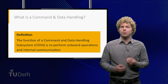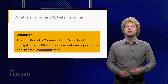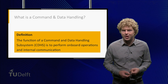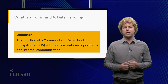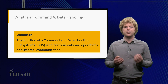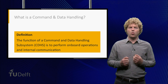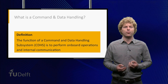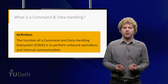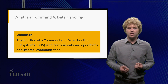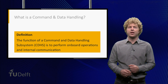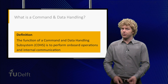The function of a command and data handling subsystem is to perform onboard operations and internal communication. This internal communication is used for commands and data between spacecraft subsystems. Onboard operation nowadays is performed by software which manages the entire spacecraft in an autonomous manner. This software also handles the data to be downlinked and commands from operators on the ground.